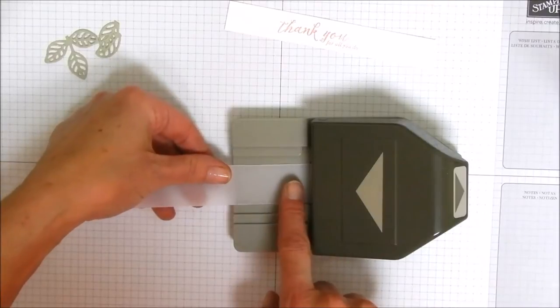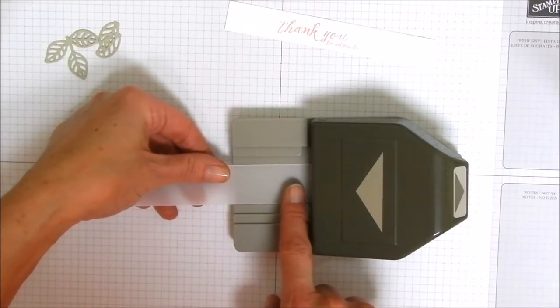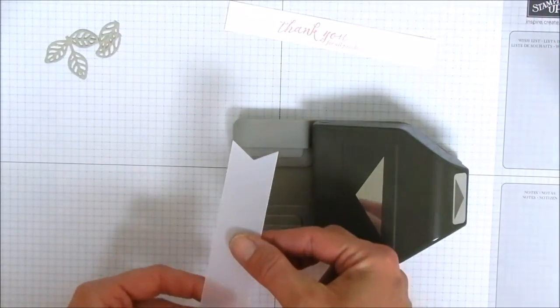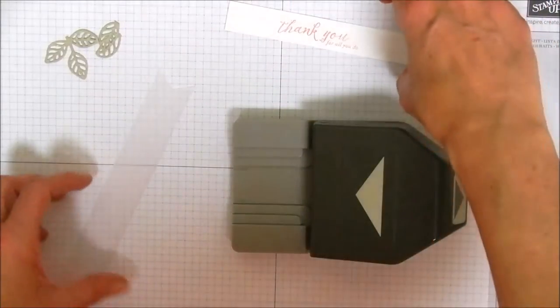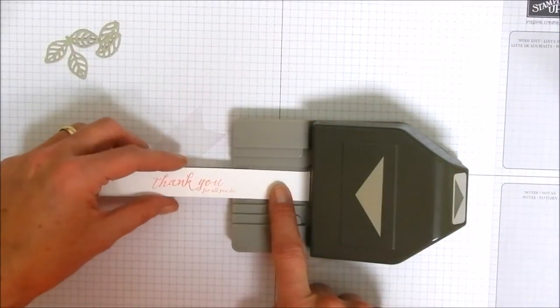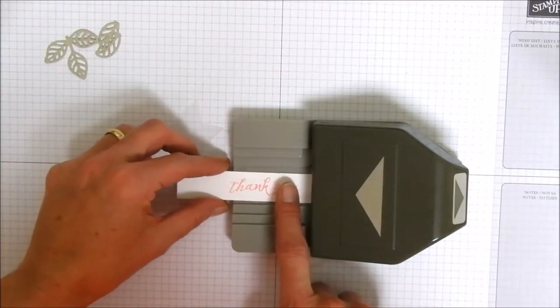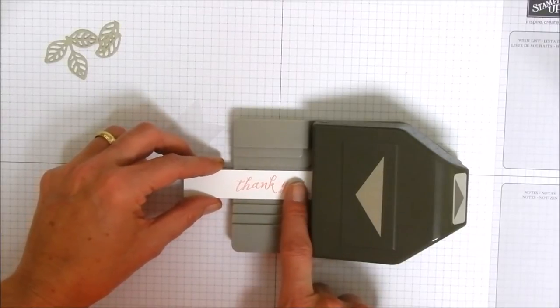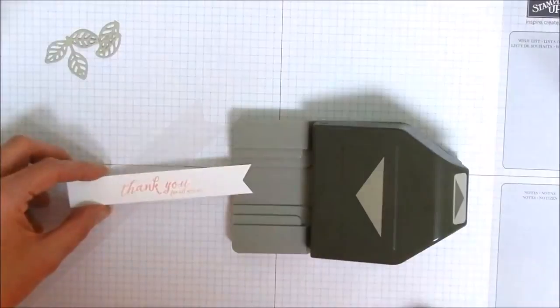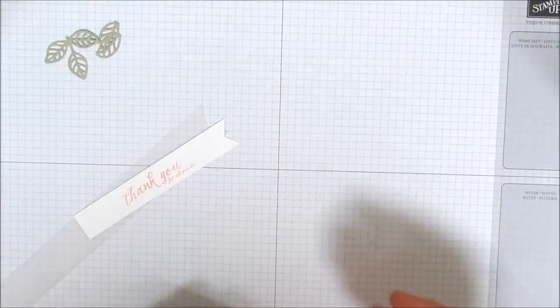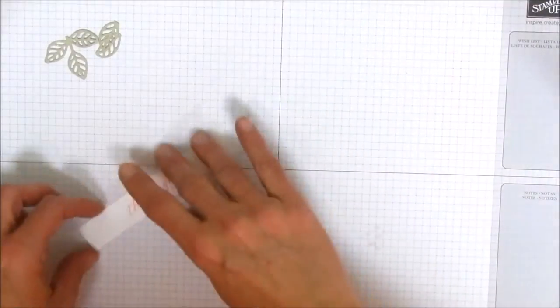So this punch makes banners in three different sizes but you can actually make banners in any size that you want. All you need to do if they don't fit inside the grooves, just center it up on the groove, push it all the way back into the punch, give it a punch and there you've got your little fishtail. And we're going to do that with this thank you piece as well. Center it up, push it all the way back, punch and we've got our little fish tail. So that is the triple banner punch.